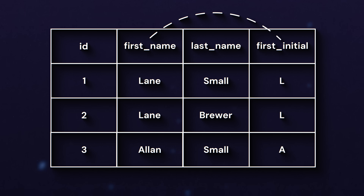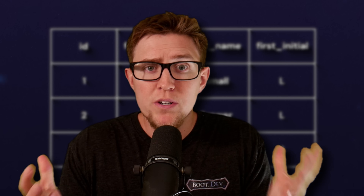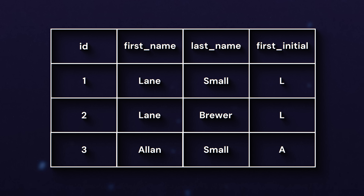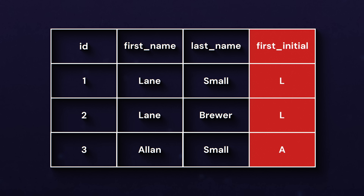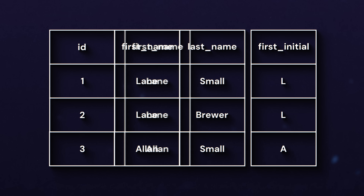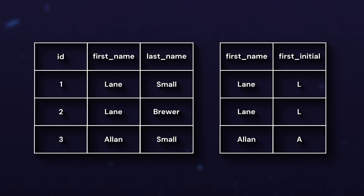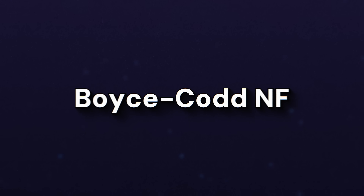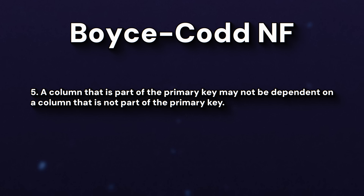But fundamentally we're still duplicating data — we know Lane maps to L and we don't need to store that relationship twice. This table breaks third normal form because a column not in the primary key, first initial, is dependent on another column not in the primary key, first name. And again, we can solve this by moving the first name to first initial mapping to a separate table. Last normal form: Boyce-Codd normal form. It adds one final rule: a column that is part of the primary key may not be dependent on a column that is not part of the primary key.